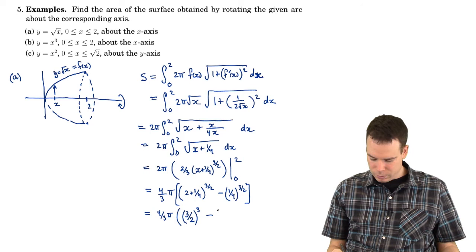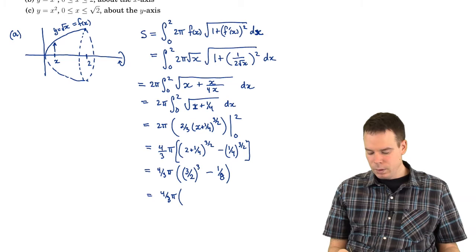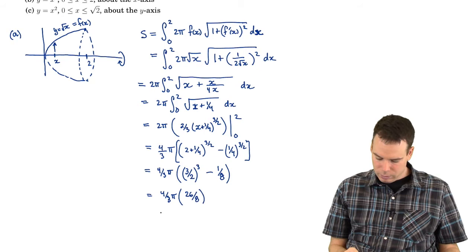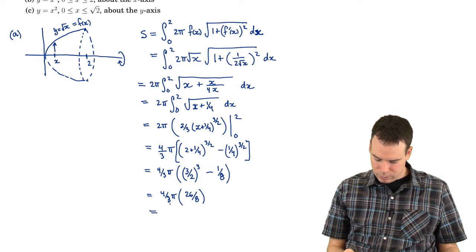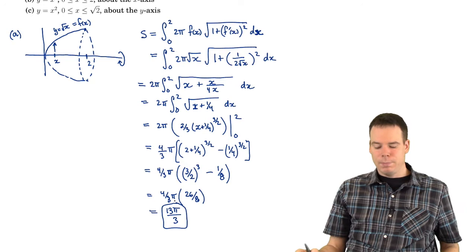And (1/4) to the 3/2 is (1/4) square-rooted, which is 1/2, cubed — so that's 1/8. So this is 4π/3 times (27/8 minus 1/8), which is 26/8. Canceling: the 8 goes into 26 leaving 13, and the remaining 4 in the denominator cancels with the 4 out front, leaving 13π/3. So there is our answer: 13π/3.